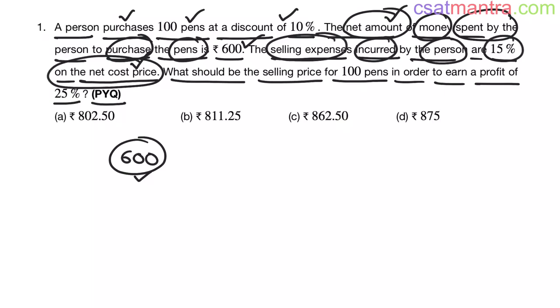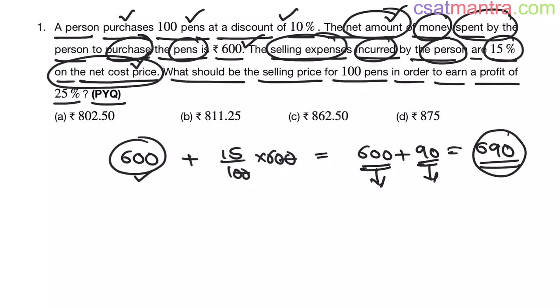Now, 15% of 600 is 15 by 100 into 600. So this is 600 plus 15, so 90, 690 rupees. So the total cost incurred by him in selling the pens is 690 rupees. 600 rupees in purchasing the pens, 90 rupees are selling expenses. So total is 690 rupees my friends.